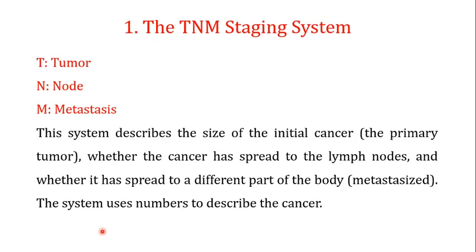The first system we discuss is the TNM staging system. TNM stands for Tumor, Node, and Metastasis. The TNM system describes the size of the initial cancer — the primary tumor — whether the cancer has spread to the lymph nodes, and whether it has spread to different parts of the body as metastasis. This system uses numbers to describe the cancer.